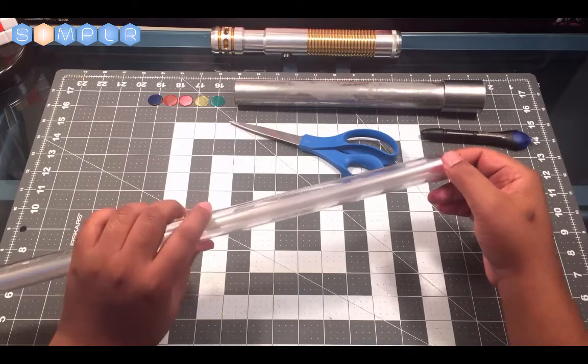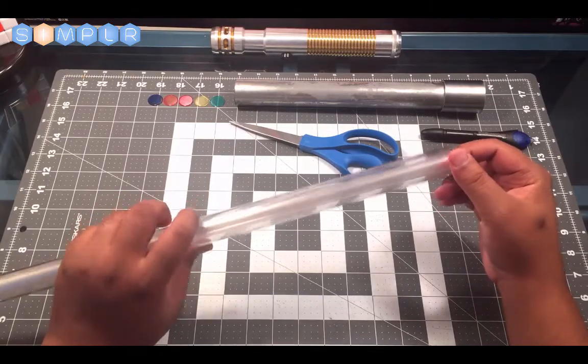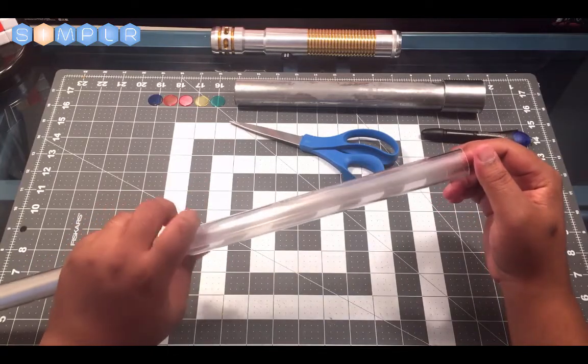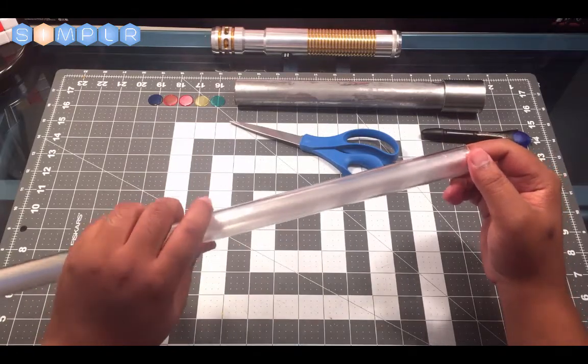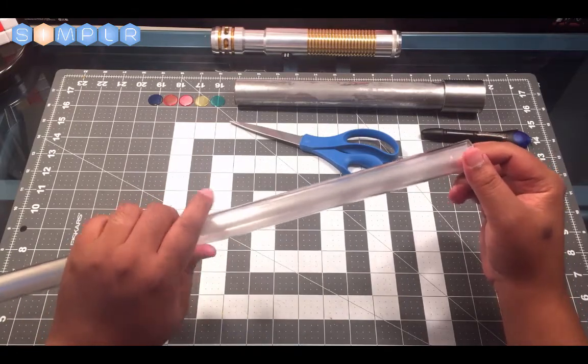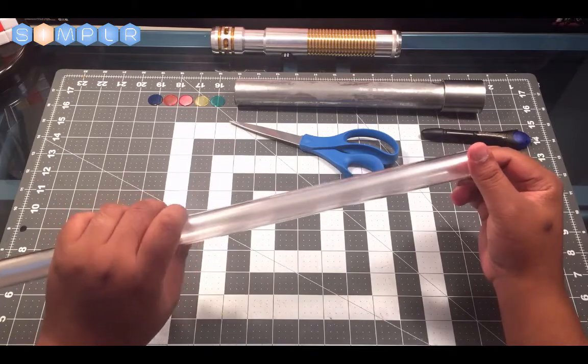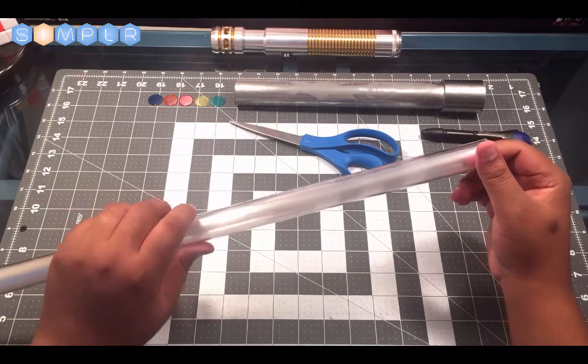As you can see, it starts to really even out the look of the tube and the blade.